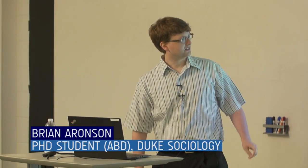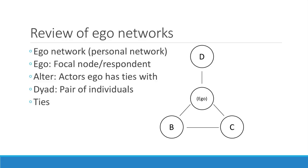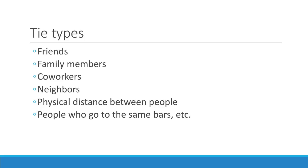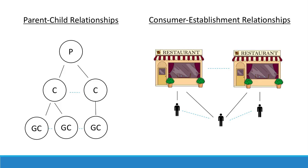In this diagram to the right, ego is in the center, and it shows all the people that ego is tied to — the person in our survey. The people that ego is tied to are called alters. Every pair between ego and alter is called a dyad, and alter-to-alter ties are also called dyads. A tie can really be anything: friends, family, coworkers, neighbors, physical distance between people, or people who go to the same sort of establishments.